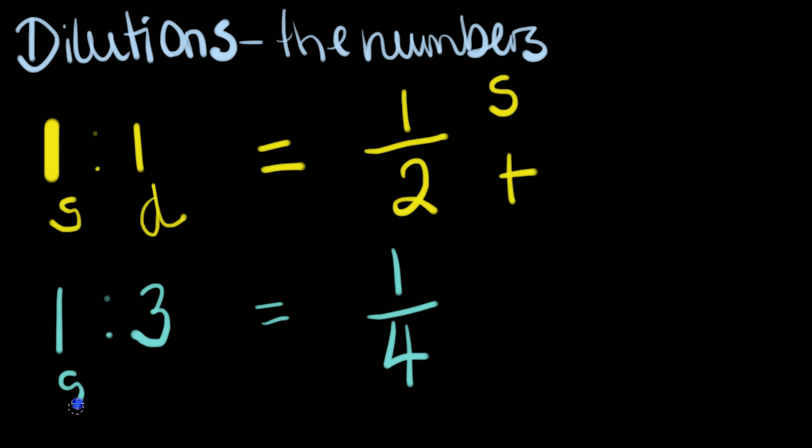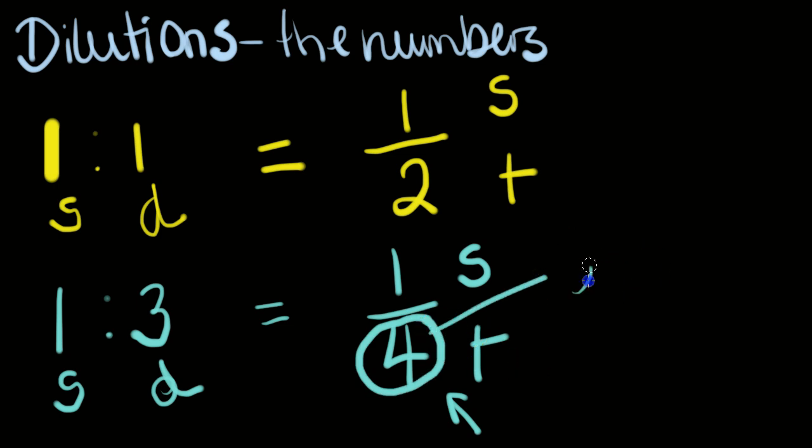So again, one part sample to three parts diluent is the same as one part sample over four parts total. The advantage of using this type of writing is that this number right here, the 4, is actually your dilution factor.